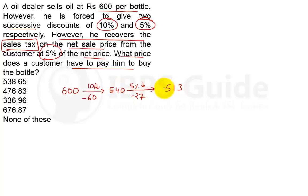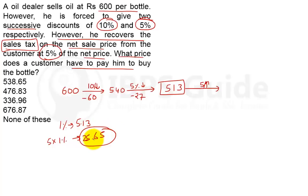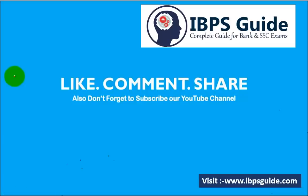The net sale price is rupees 513. Now, 5% sales tax is applied on this net sale price. 10% of 513 = 51.3, so 1% = 5.13, and 5% = 5 × 5.13 = 25.65. Total price the customer pays = 513 + 25.65 = rupees 538.65. Option number A will be the correct answer. If you like this video, do like, comment, and don't forget to subscribe to our YouTube channel, and for quality mocks, visit ivpsguide.com. Thank you for watching and have a nice day!